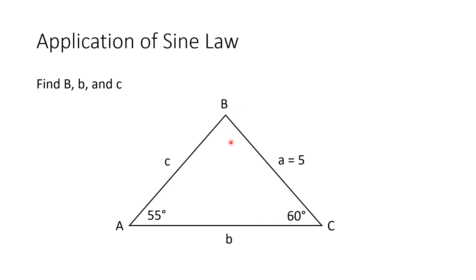Remember that the sum of the angles of a triangle is equal to 180 degrees. So first, we get the sum of angles A and C: 55 degrees plus 60 degrees equals 115 degrees. Therefore, angle B equals 180 degrees minus 115 degrees, which is 65 degrees.